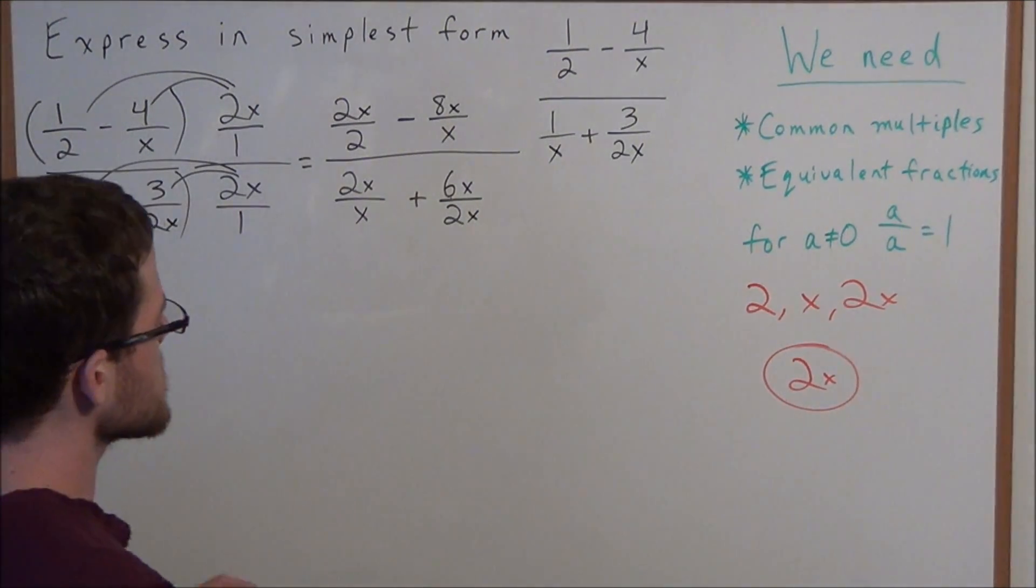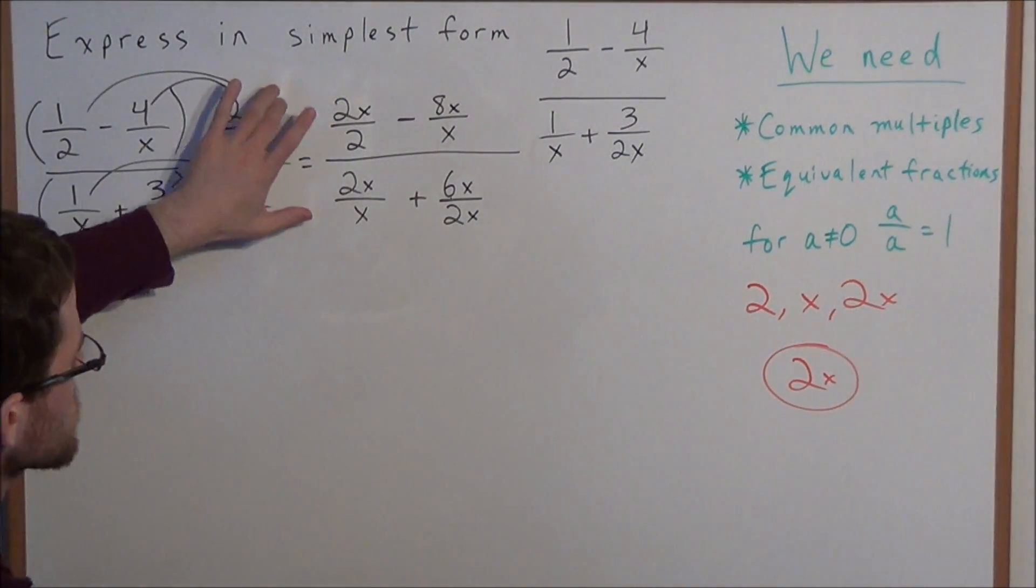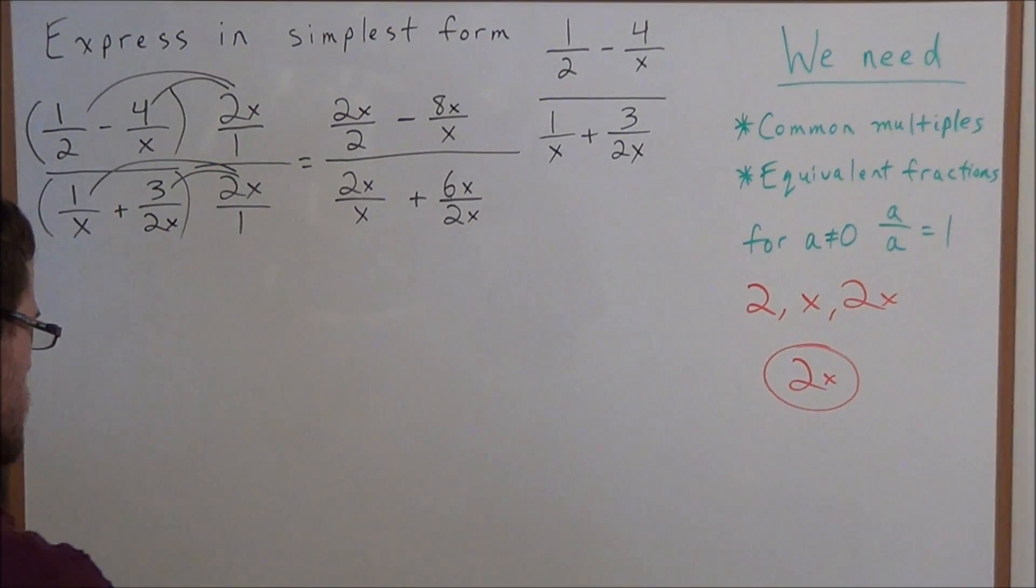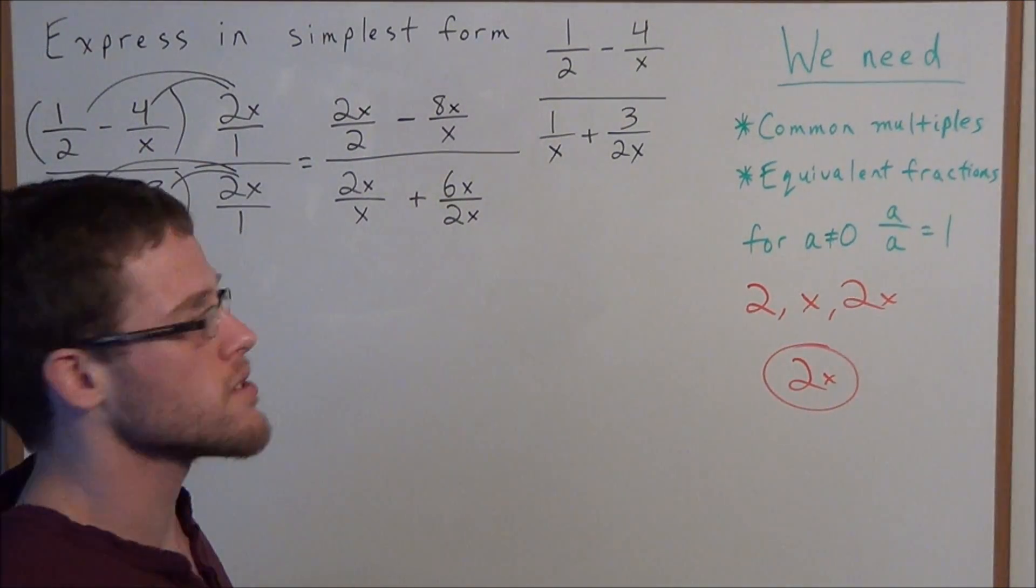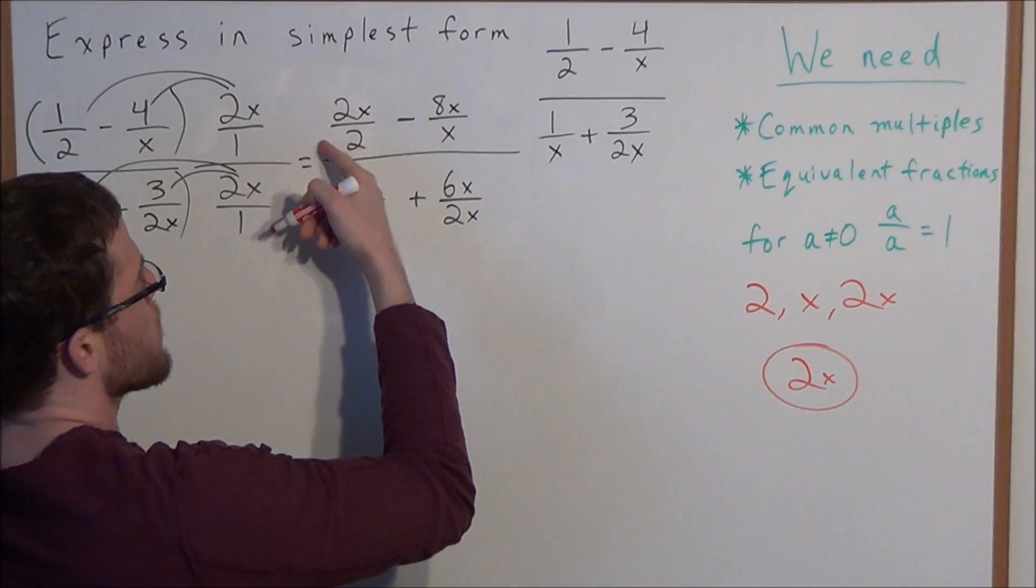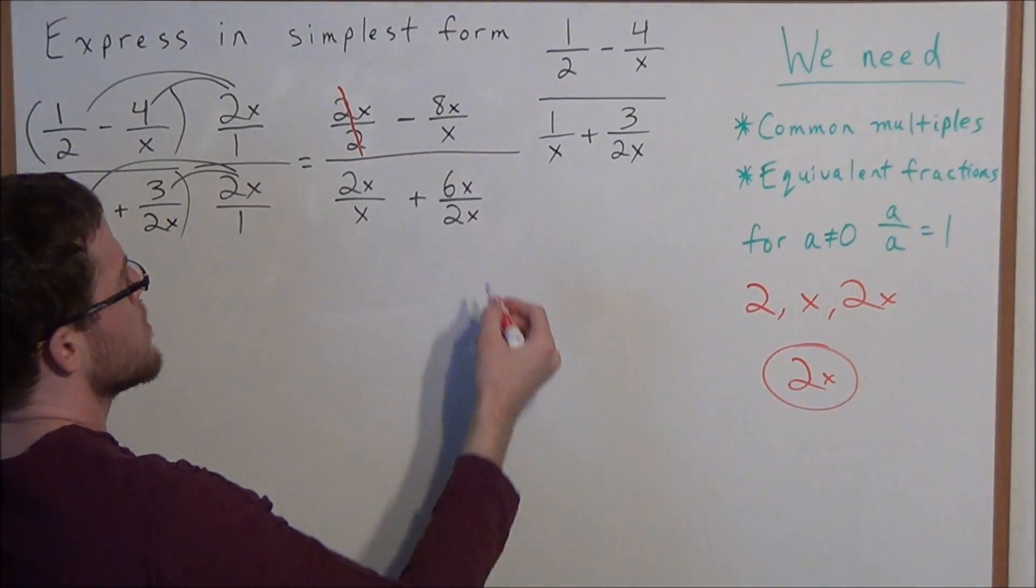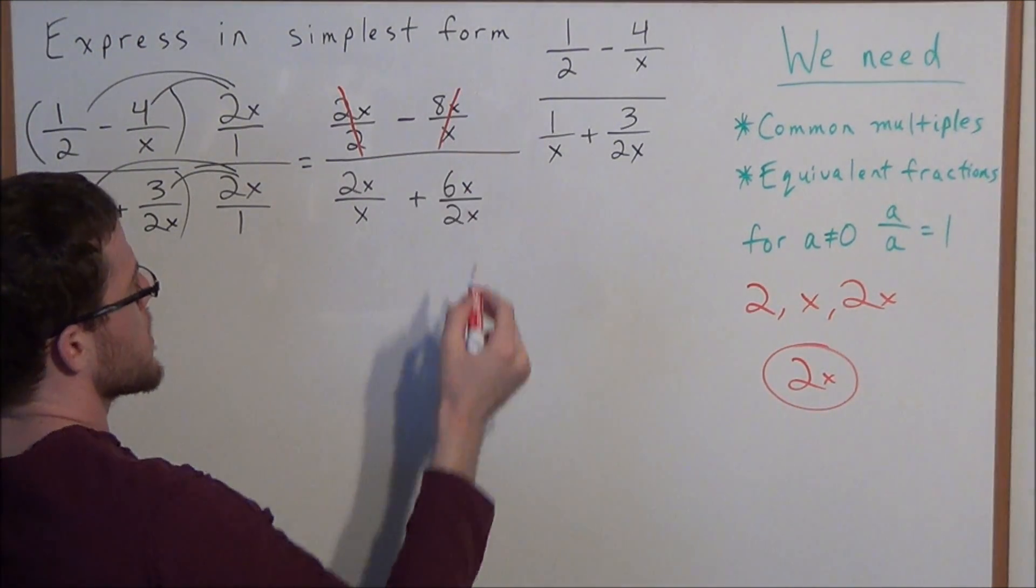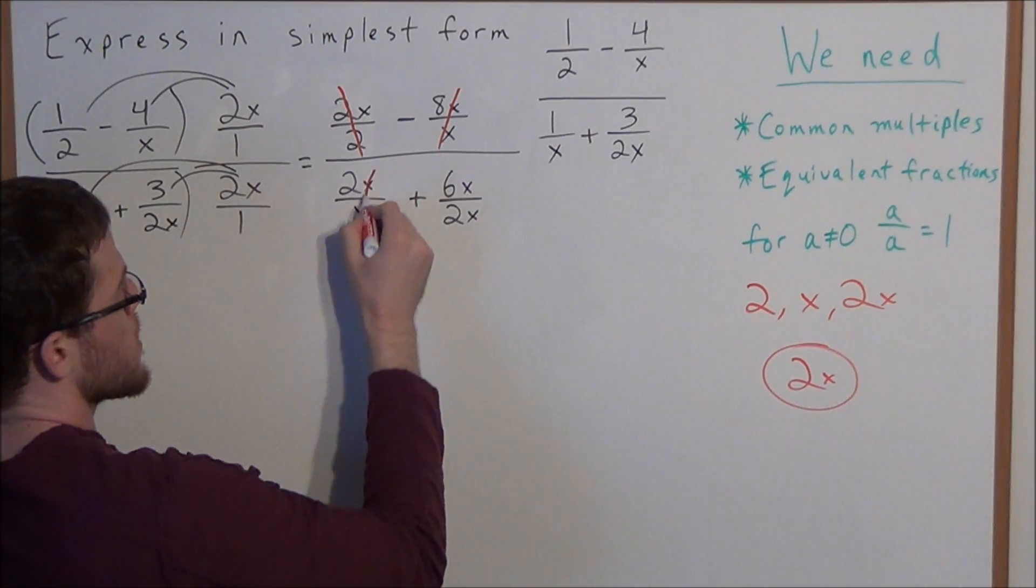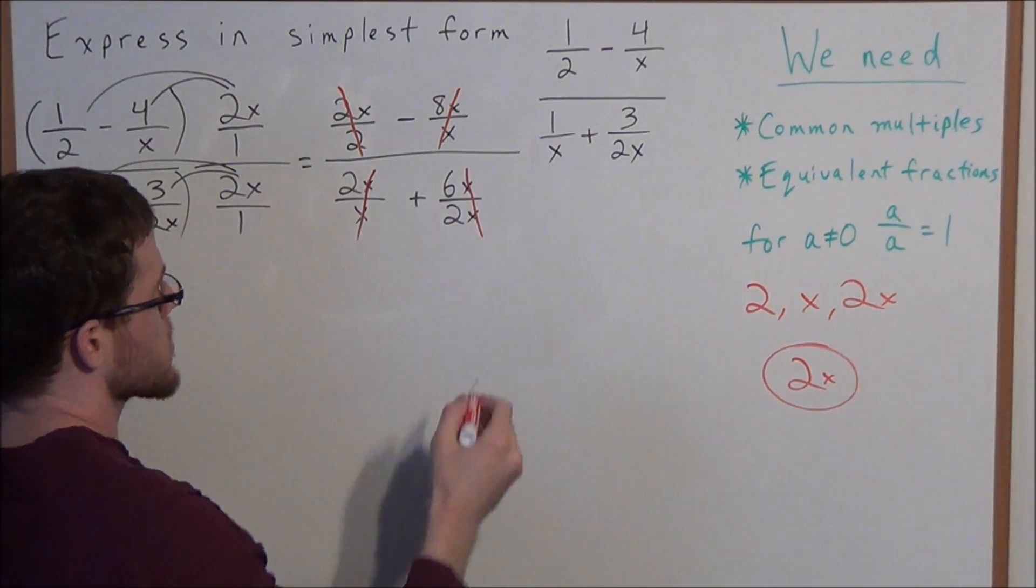And now, the reason why we wanted to multiply by this 2x over 2x is, watch what's going to happen now. Now things are going to start to cancel. We have 2 divided by 2 is going to cancel. We have x over x is going to cancel. We have x over x cancels. And once again, x over x cancels.